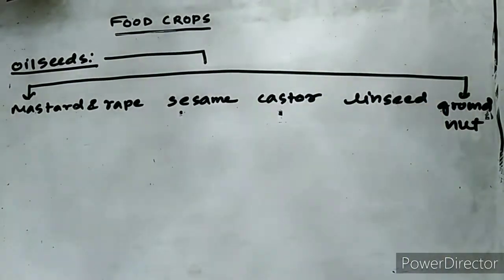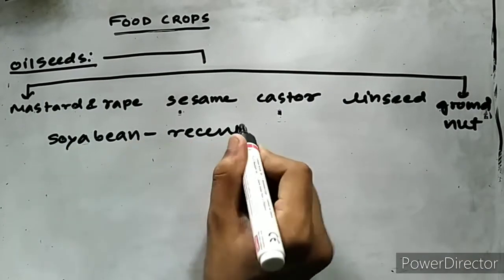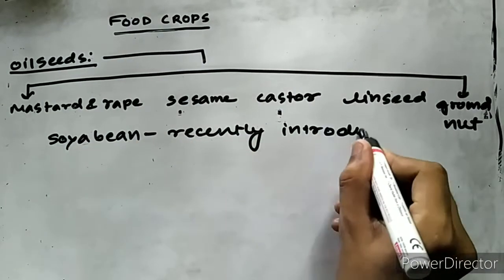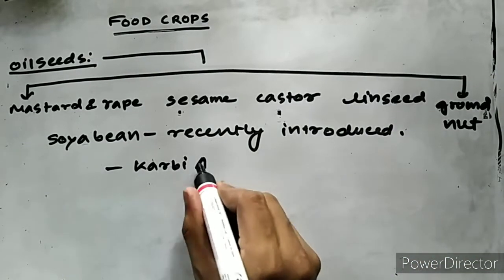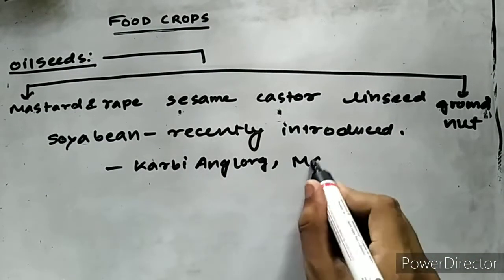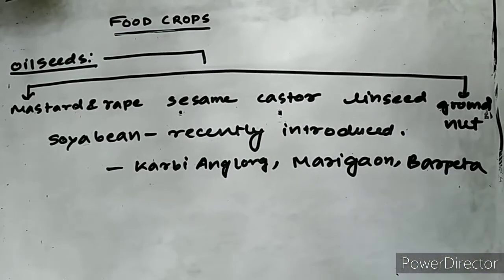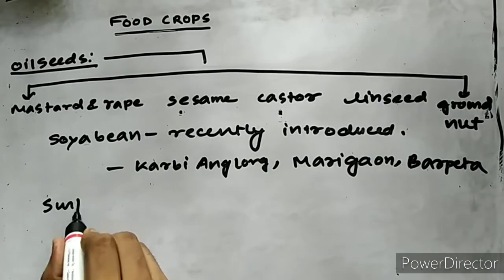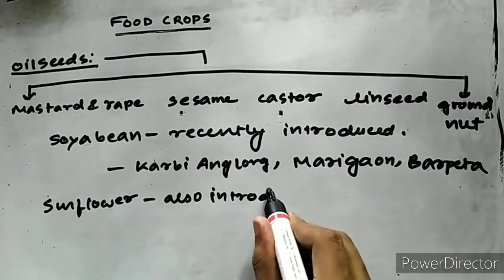Besides these traditional oilseeds, soybean, another source of oil, has recently been introduced in the northeast region. It is said that Assam's soil and climate is suitable for soybean. Its production is seen in Karbi Anglong, Morigaon, and Barpeta districts. Cultivation of sunflower has also been introduced in Assam in recent years.